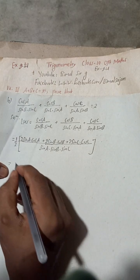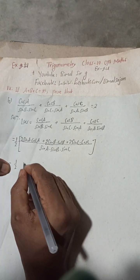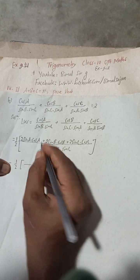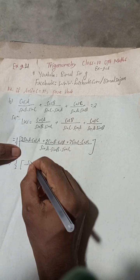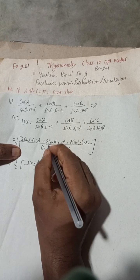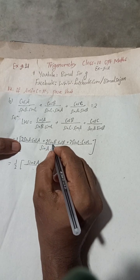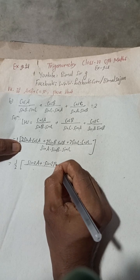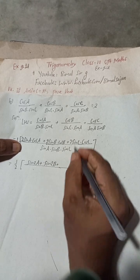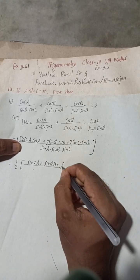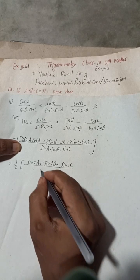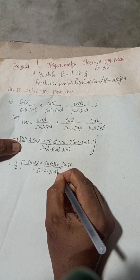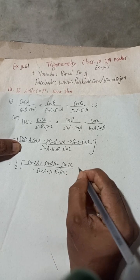This gives us one-half as a factor. Now: 2 sin A cos A is the formula for sin 2A, plus 2 sin B cos B is the formula for sin 2B, and 2 sin C cos C is the formula for sin 2C, and the denominator is sin A · sin B · sin C.